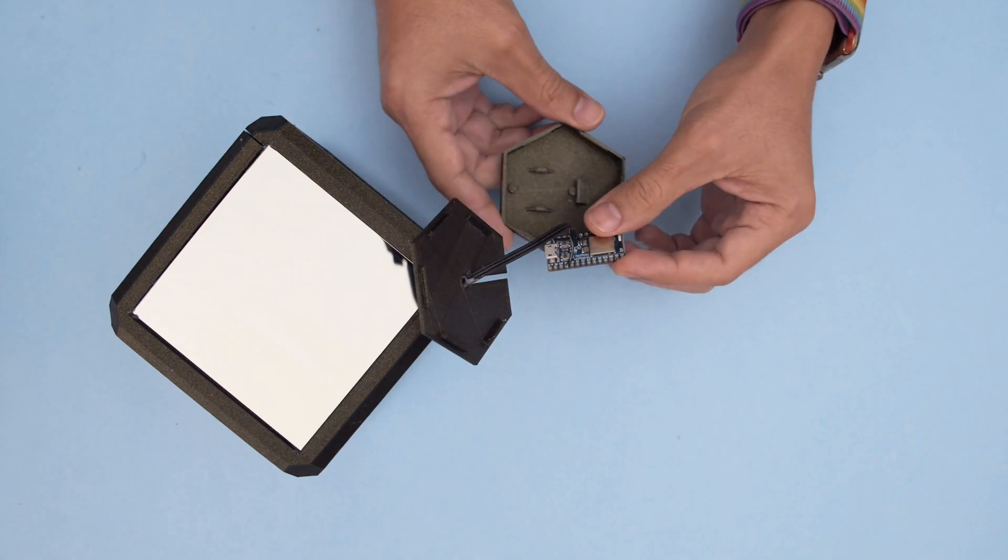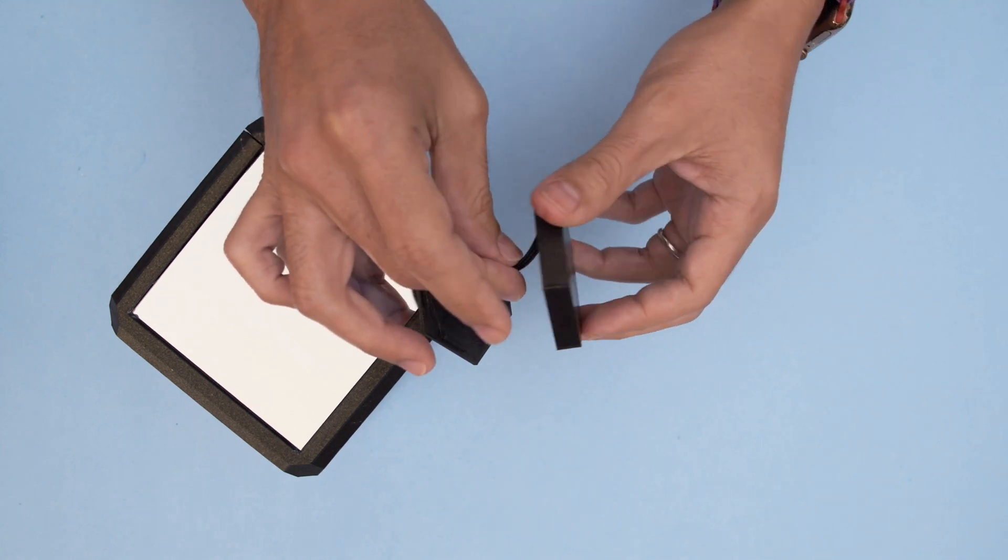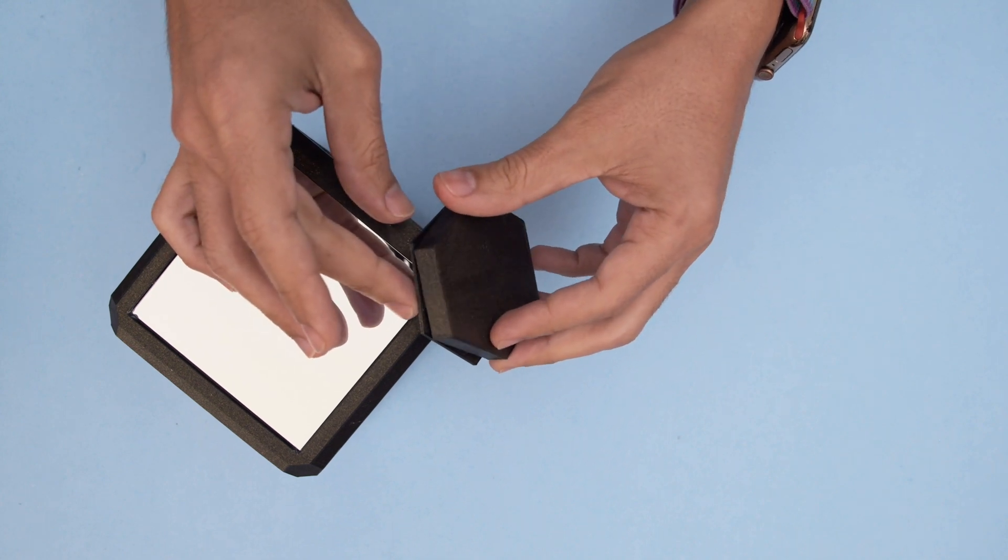The itsy bitsy board snap fits into the case and these tabs will keep it secured. The case itself can then be snap fitted onto the cover.